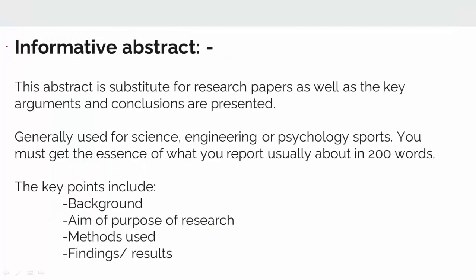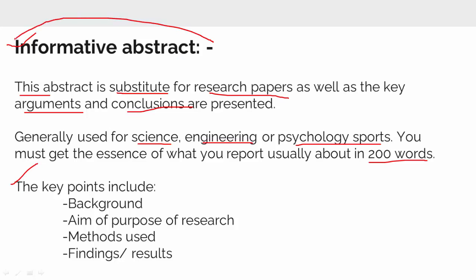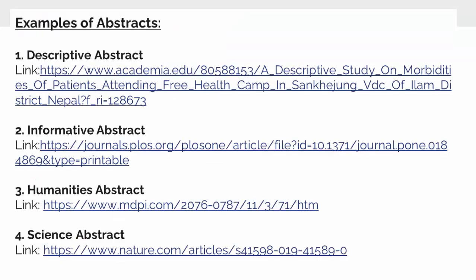The second type is the informative abstract. This abstract generally works as a substitute for the research paper as it summarizes the whole of it and presents the key arguments and conclusions. It is generally used for science, engineering, or psychology. Here we use around 200 words and the main parts include background, aim, the methods used, and the findings.